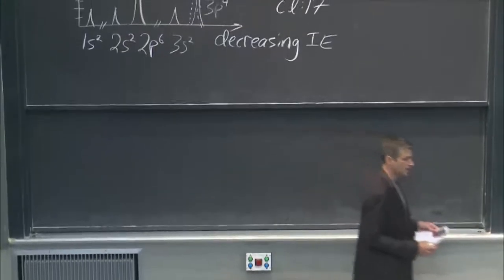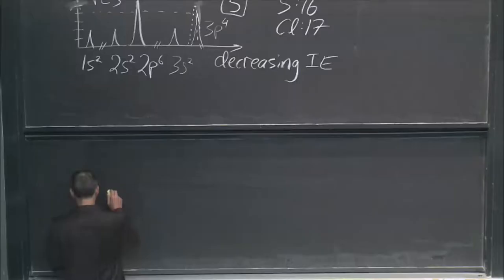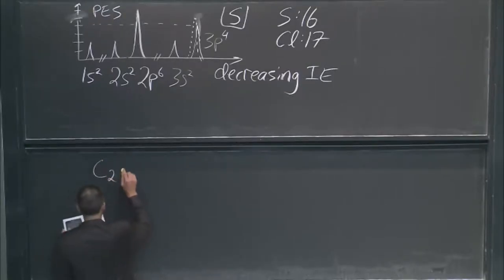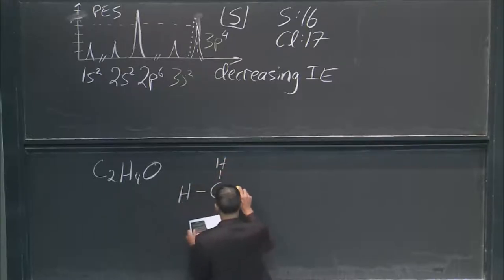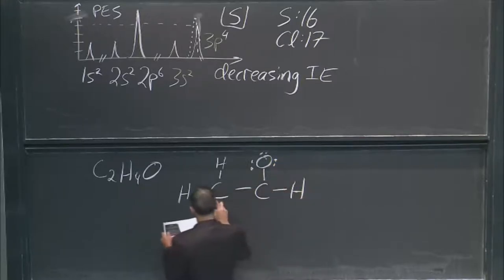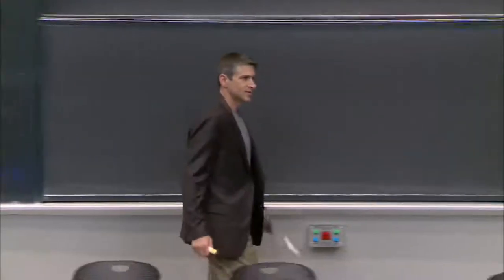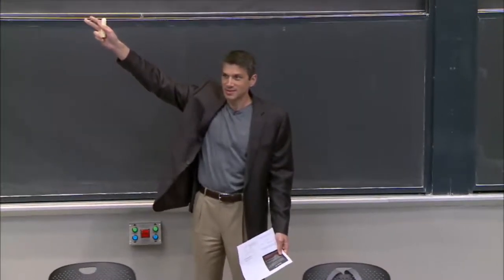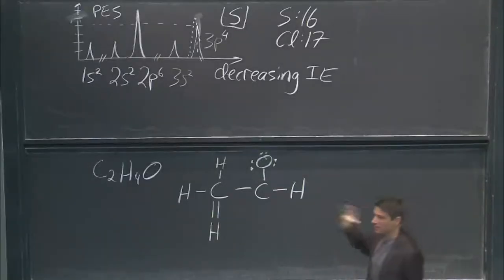Now, on Wednesday we talked about Lewis structures, so let's talk about Lewis structures more. Suppose I've got acetaldehyde — a wonderful toxic compound, C₂H₄O. Here is a possible Lewis structure for this. I'm going to draw the two carbons, here's the oxygen with some lone pairs, hydrogens here. What is wrong with this? Double bond on the hydrogen.